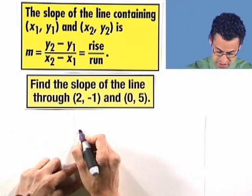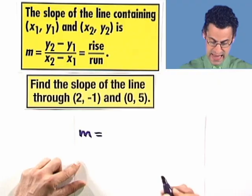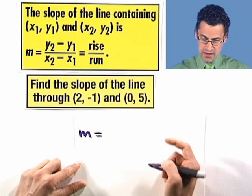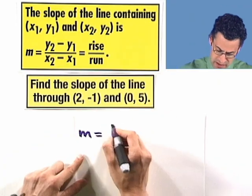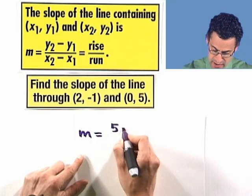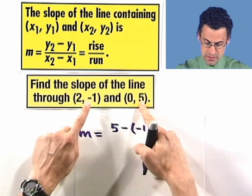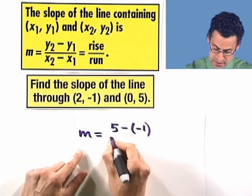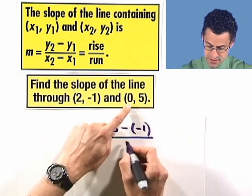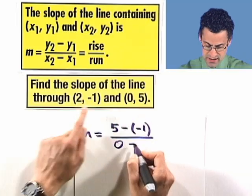So here we go, slope, which is almost always written like m, is going to equal. Now I'm going to take 5 minus negative 1. I want you to watch this with me, 5 minus negative 1. You see why I took the y value here and the y value here and I'm subtracting, divided by 0 minus 2.